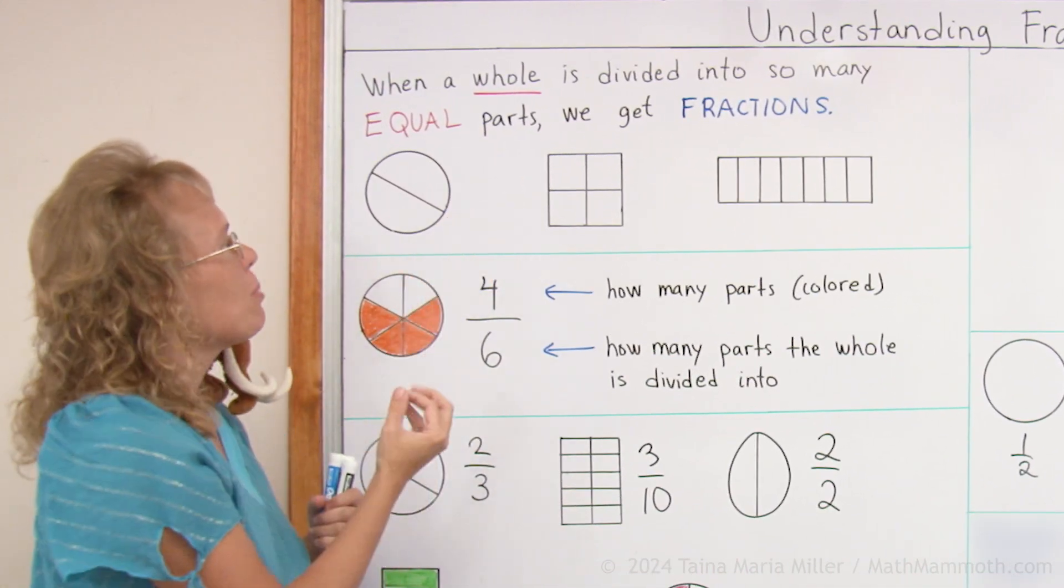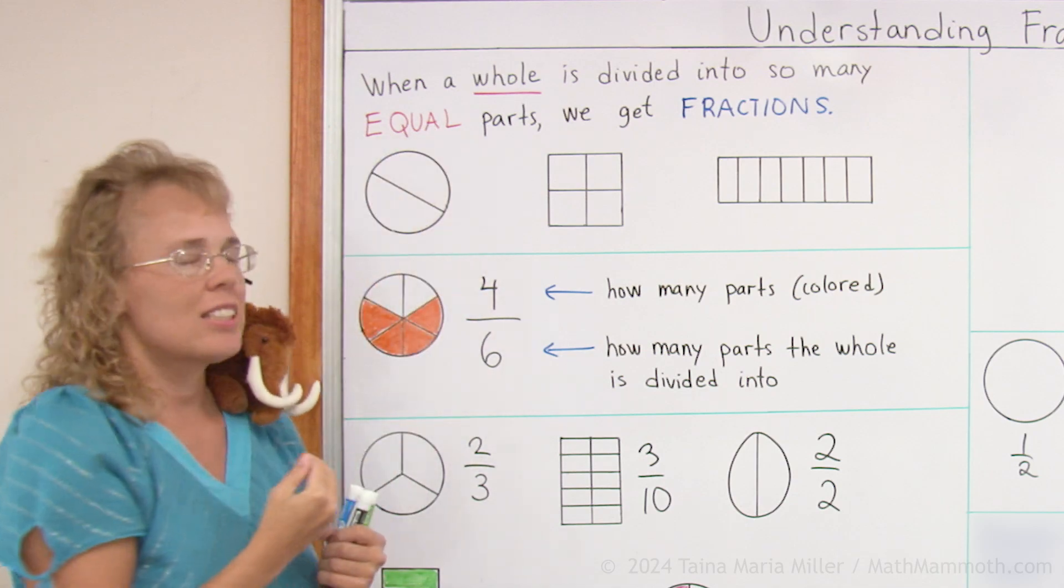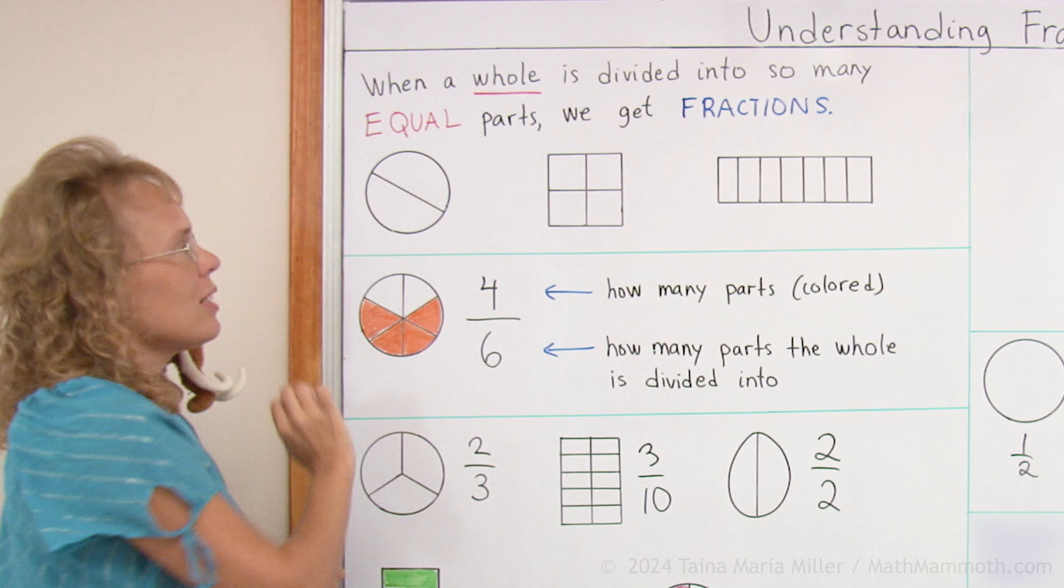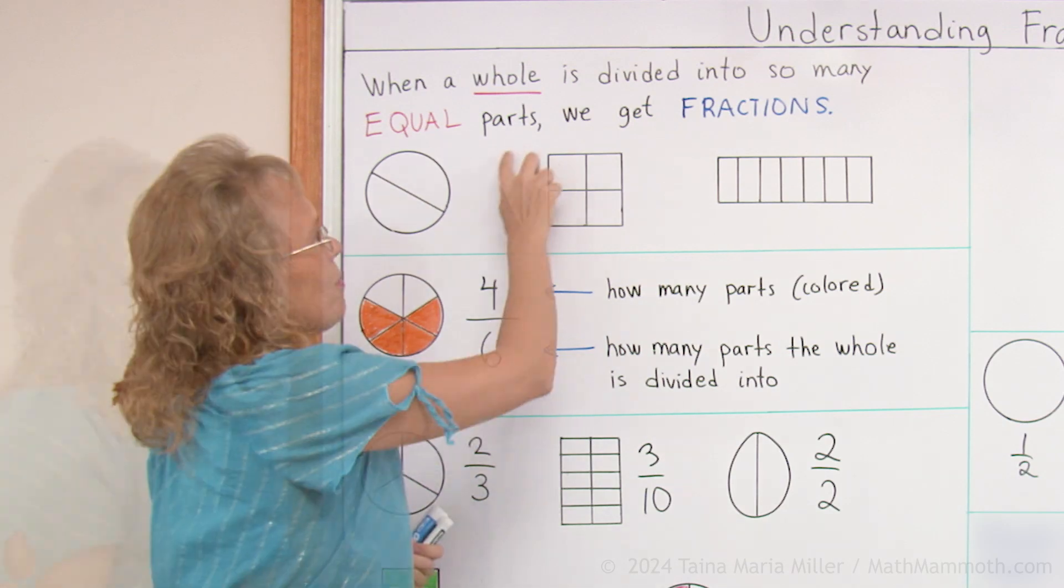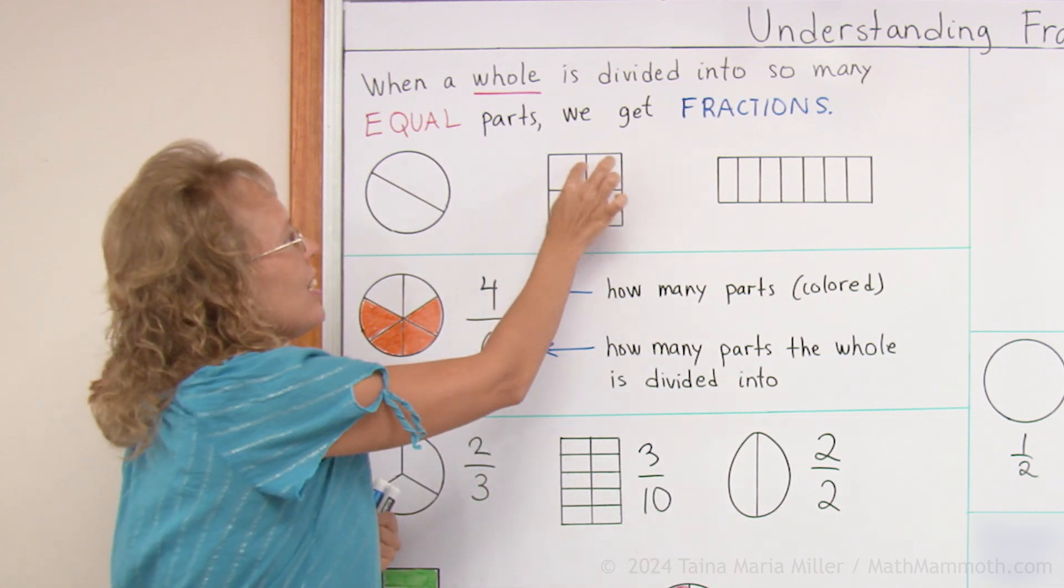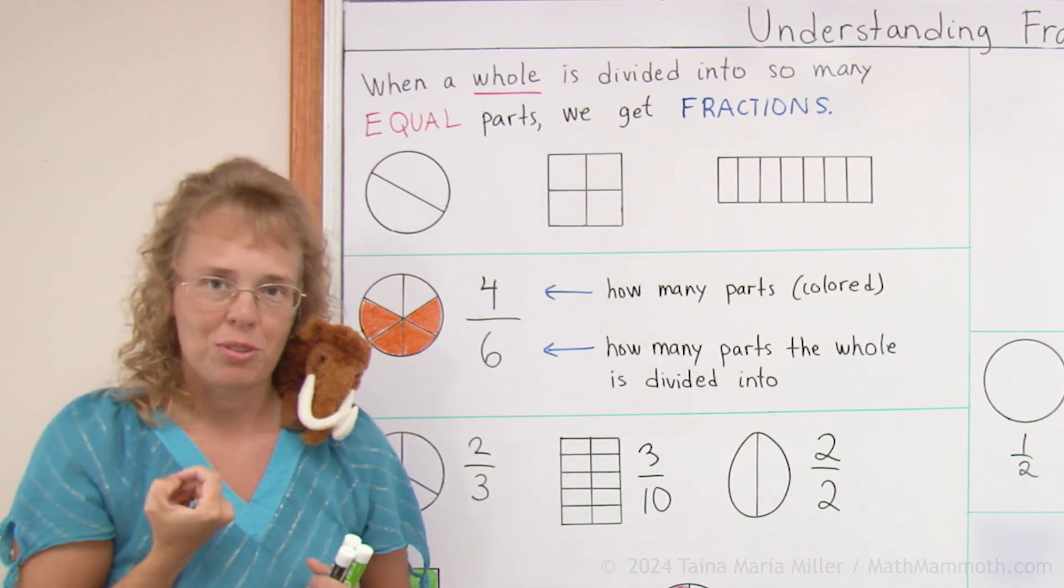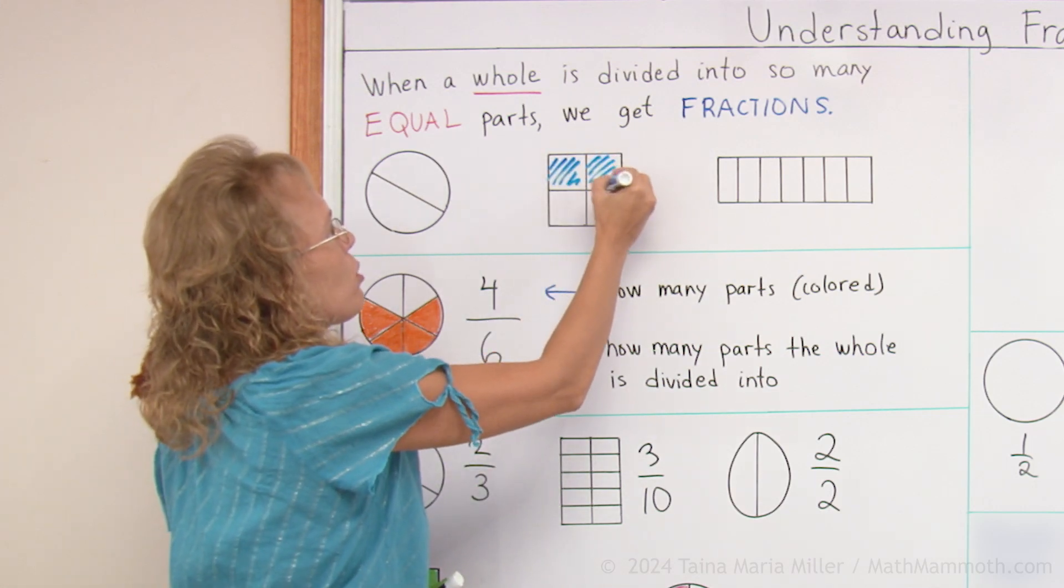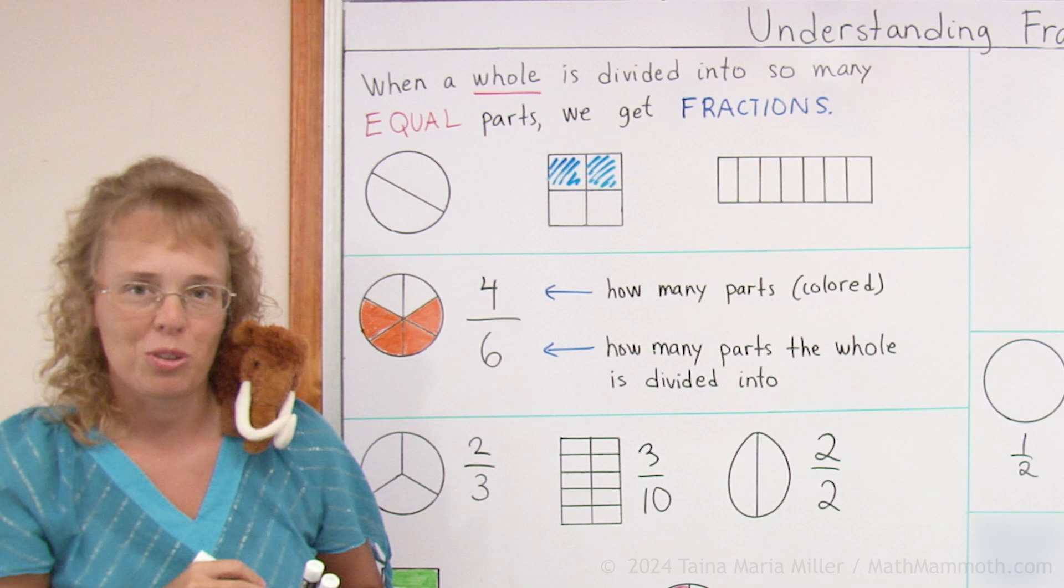For example, I have some shapes here, there's a circle that's divided into two equal parts, right? And so each part is one half. If I have a square here that's divided into four equal parts, then each part is one fourth. We could take maybe two of those parts, we could take two fourths of it.